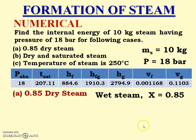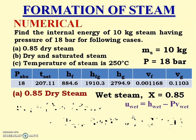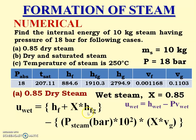The equation for internal energy of wet steam is: u_wet = h_wet − p·v_wet, which expands to: u_wet = hf + x·hfg − (pressure in bar × 10² × x × vg). We have hf and vg from the steam table, x from the numerical, and pressure given — so all data is available.